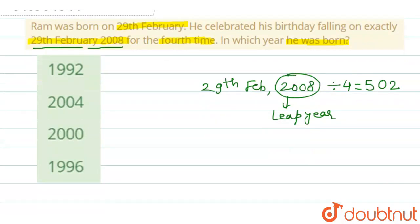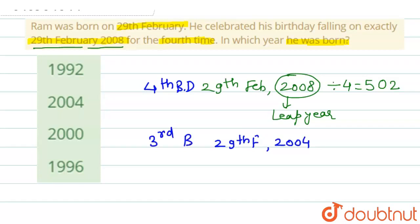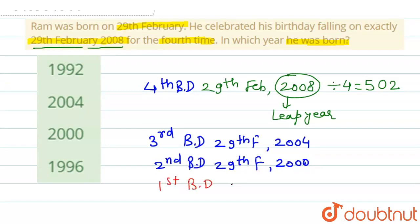So, if in 2008 he celebrated his 4th birthday, it means on 29th February 2004 he would have celebrated his 3rd birthday. Then, on 29th February 2000, he would have celebrated his 2nd birthday.